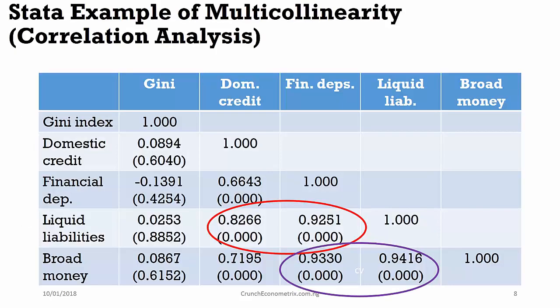Now, let's consider a Stata output showing correlation analysis involving multicollinearity. On the screen is the Gini index which is a dependent variable and 4 explanatory variables. Let's look at liquid liabilities. Liquid liabilities exhibit high collinearity of almost 0.83 with domestic credit and almost 0.93 with financial deposits.